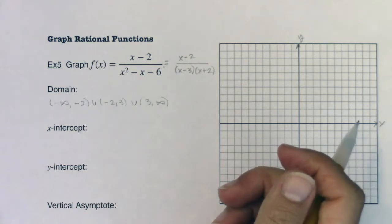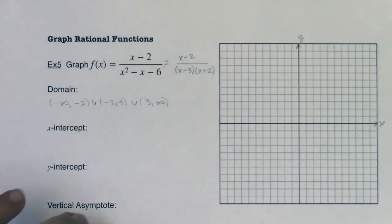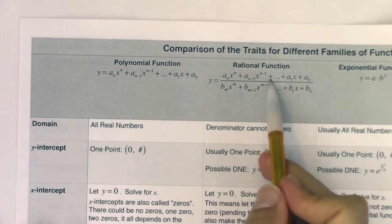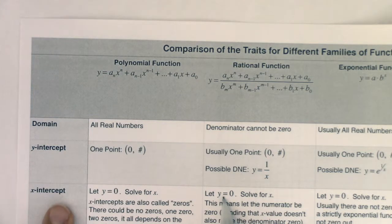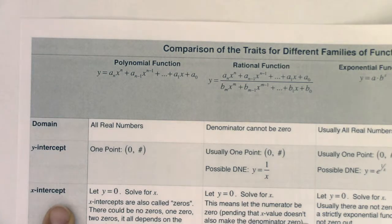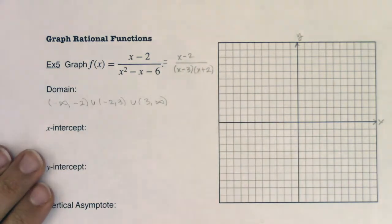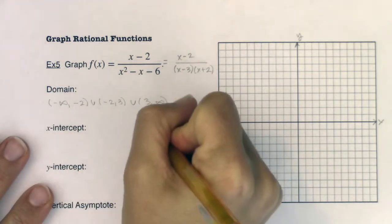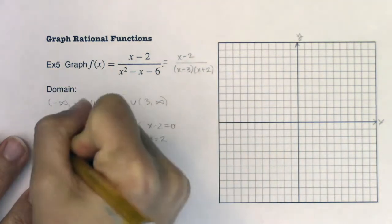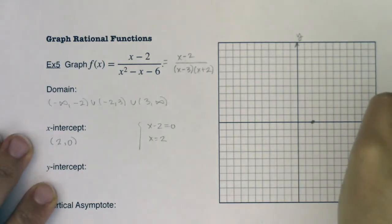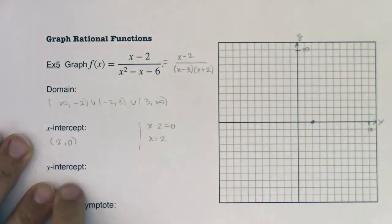For x-intercepts with rational functions, let y=0 and solve for x — meaning let your numerator equal zero, provided that x value doesn't also zero out the denominator. My numerator is x-2, so x-2=0 gives x=2. I need to write this as an ordered pair: (2, 0). Let me go put that on my graph.